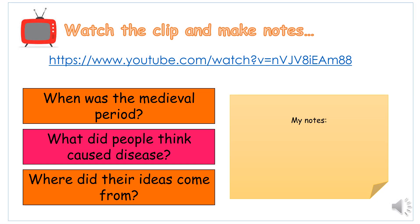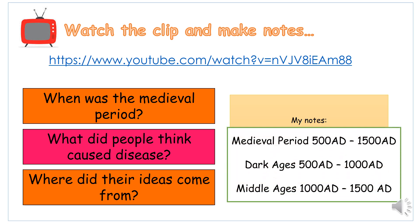Welcome back. In answer to the first question: the medieval period was a very long period from 500 AD to 1500 AD. You can divide this into the Dark Ages, when medieval ideas kind of stopped and went backwards, and the Middle Ages — from 1000 AD to 1500 AD — which is the period we're mostly interested in, going back 500 to a thousand years ago. We're now going to focus on what people thought and where their ideas came from by looking at two people from the video.